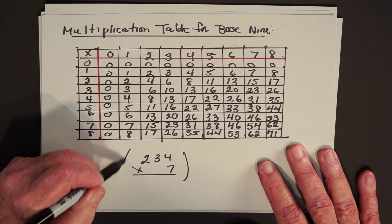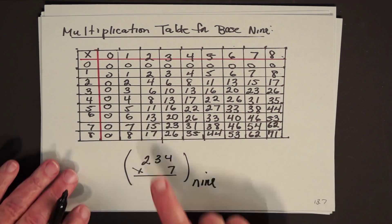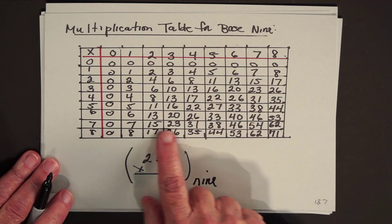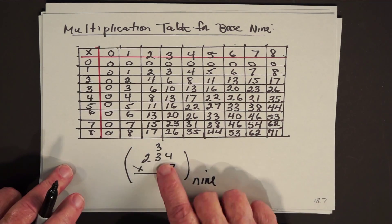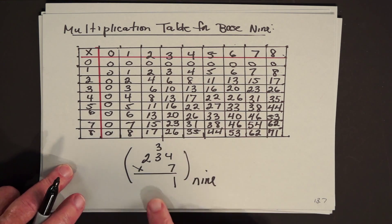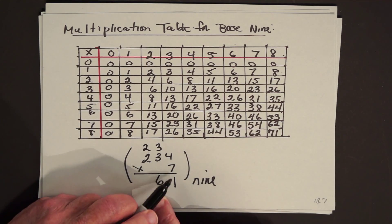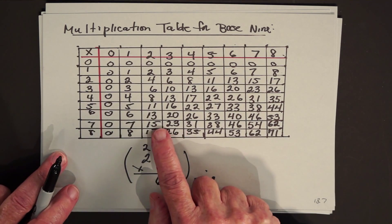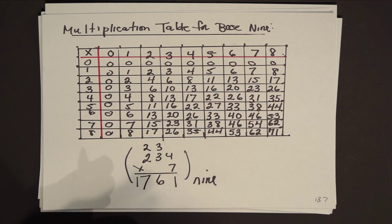So, in other words, if this was a base 9 problem, using the table, let's see, 7 times 4. Here's 7 times 4. That's 3, 1. Put down the 1 and carry the 3. 7 times 3 is 2, 3, and the 3 that you carried is 2, 6. 7 times 2 is 1, 5. And now do you start to get the feeling that maybe things can be a little bit complicated?